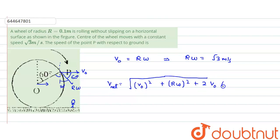V_naught into R omega into cosine of the angle between them, which is 60 degrees. If you put the values, V_naught is root 3, so root 3 squared would be 3. R omega is root 3, so root 3 squared would be 3.